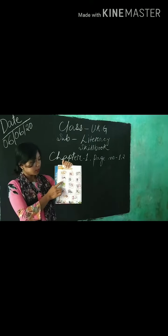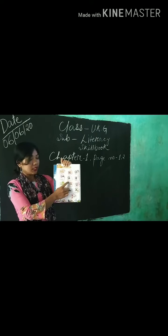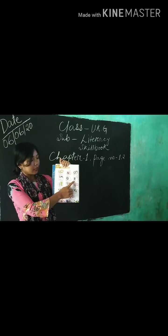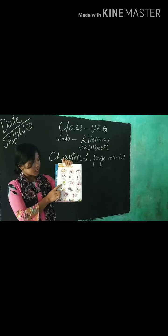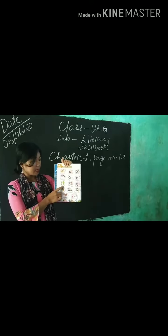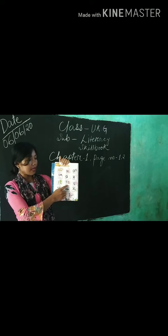P for Penguin — P, E, N, G, U, I, N. Penguin. Q for Quill — Q, U, I, W, L. Quill. R for Rabbit — R, A, W, I, T. Rabbit. S for Snake — S, M, A, K, E. Snake. T for Tiger — T, I, G, E, R. Tiger.